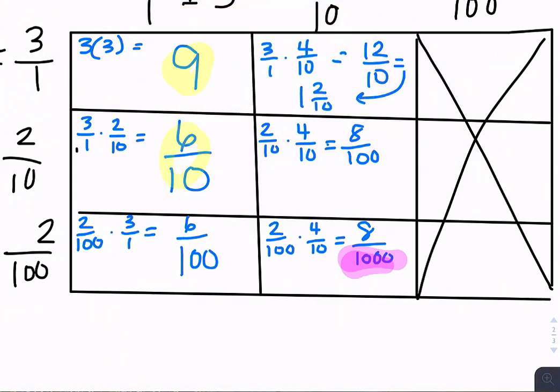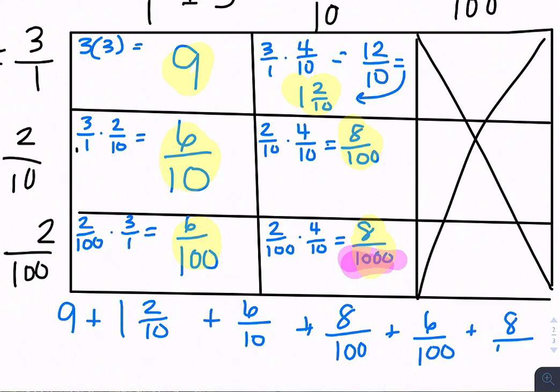My common denominator is 1,000. So what I'm really doing here is adding together my 9, my 6 tenths, my 6 hundredths, 1 and 2 tenths, 8 hundredths, and 8 thousandths. So I have 9 plus 1 and 2 tenths, plus 6 tenths, plus 8 over 100, plus 6 over 100, plus 8 over 1,000.